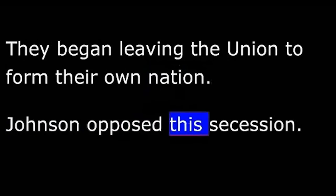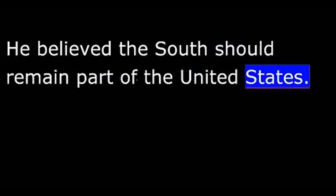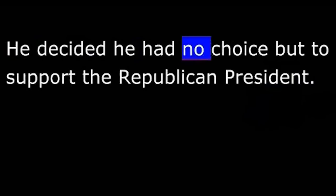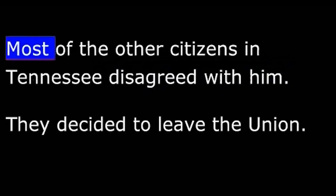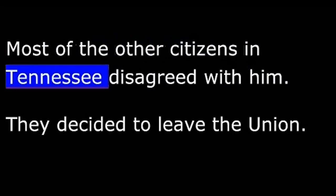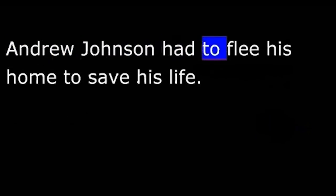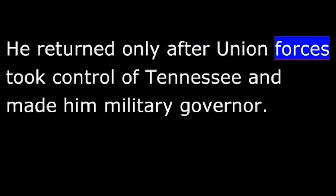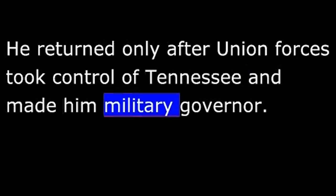Johnson opposed this secession. He believed the South should remain part of the United States. He decided he had no choice but to support the Republican president. Most of the other citizens in Tennessee disagreed with him. They decided to leave the Union. Andrew Johnson had to flee his home to save his life. He returned only after Union forces took control of Tennessee and made him military governor.